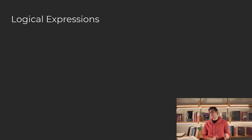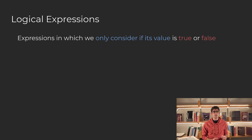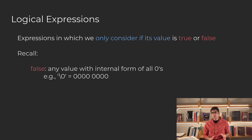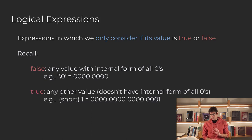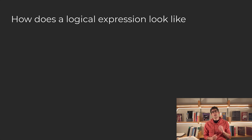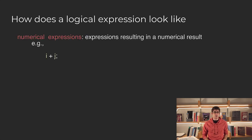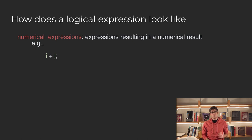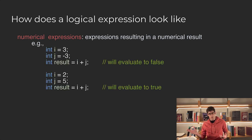Logical expressions are just expressions in which we only care if the return value is either true or false. Remember our definition: any value with an internal form of all zeros evaluates to false, and any other value evaluates to true. This leaves the definition for logical expressions quite open, so we can use something like numerical expressions, like i plus j, as logical expressions by only differentiating if the return is either 0 or not 0.